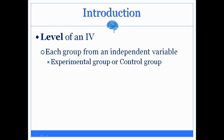So what is a level of an IV? A level is the particular group that makes up the independent variable. An independent variable is what is being manipulated in an experiment, and it consists of two or more groups. For instance, you have an experimental group as well as a control group. The experimental group is considered level 1, and the control group is considered level 2.